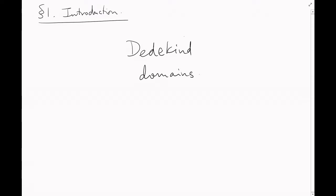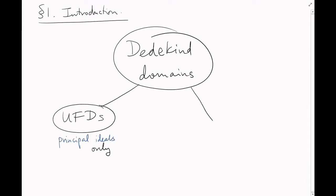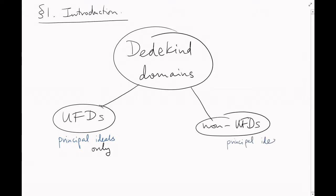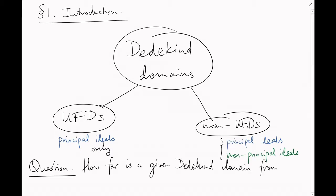We've seen that some Dedekind domains are unique factorization domains, meaning that all of their ideals are principal, and some aren't, meaning that they have non-principal ideals too. In this video, we're going to refine this notion a bit, and ask the question: given a Dedekind domain R, how far is it from being a unique factorization domain?